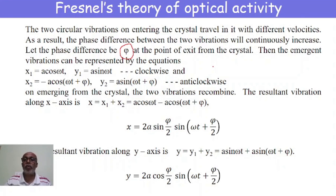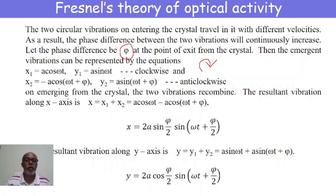Let φ represent the phase difference at the point of exit from the crystal. When the two vibrations exit, the emergent vibrations are represented as: x₁ = a·cos(ωt), y₁ = a·sin(ωt) for clockwise rotation, and x₂ = −a·cos(ωt + φ), y₂ = a·sin(ωt + φ) for the anti-clockwise. The φ represents the phase difference between x₁ and x₂, and between y₁ and y₂, at the point of exit from the crystal.